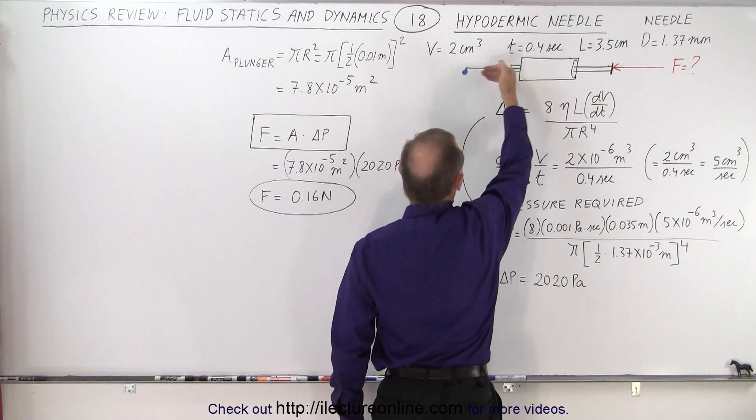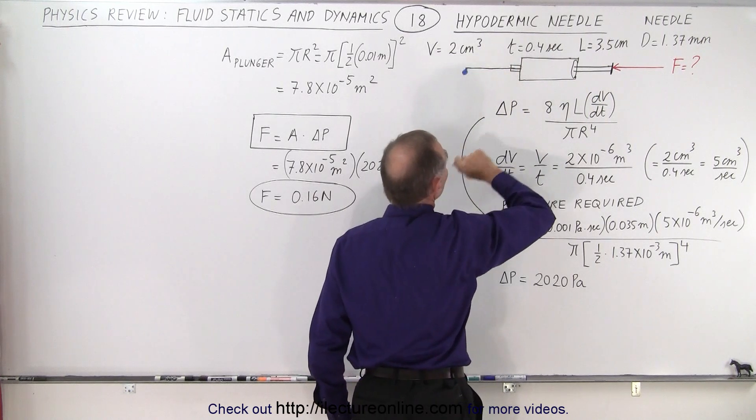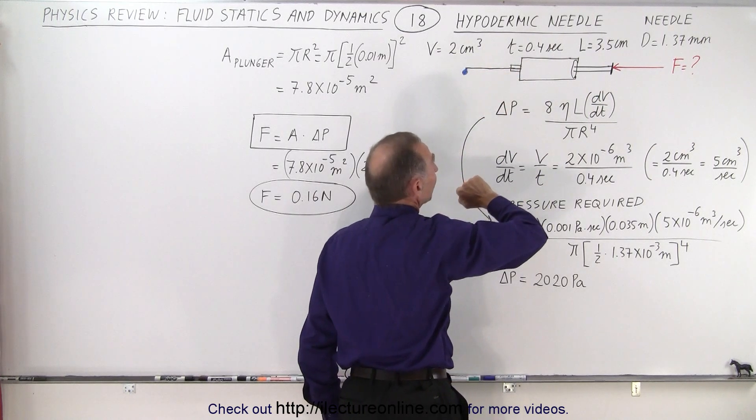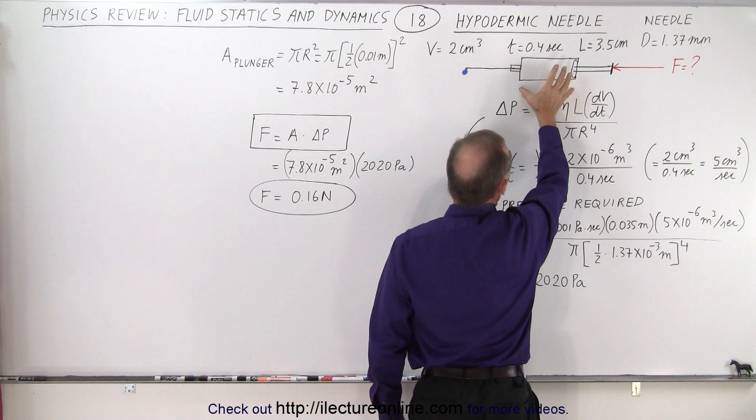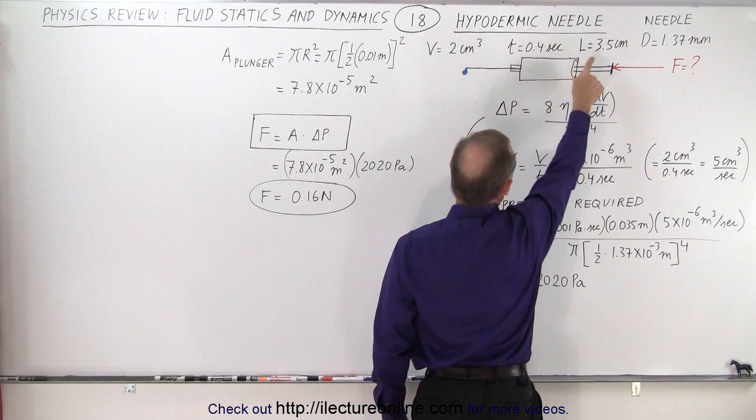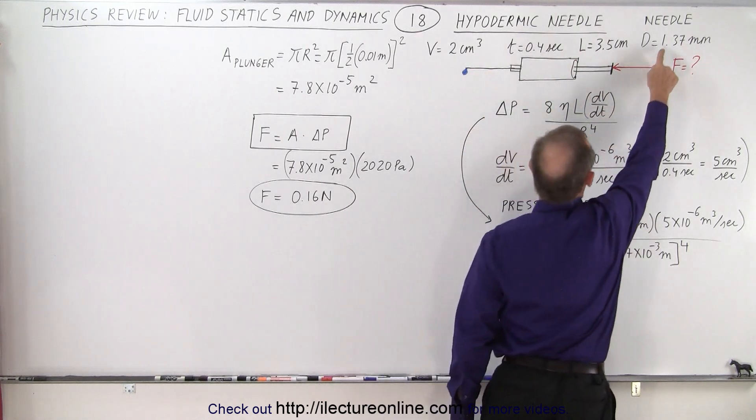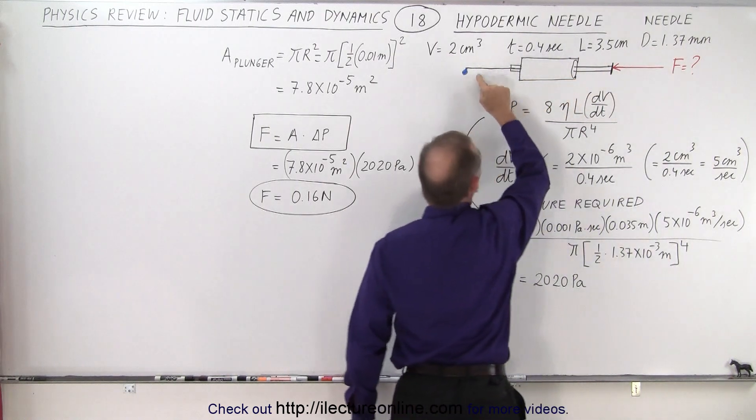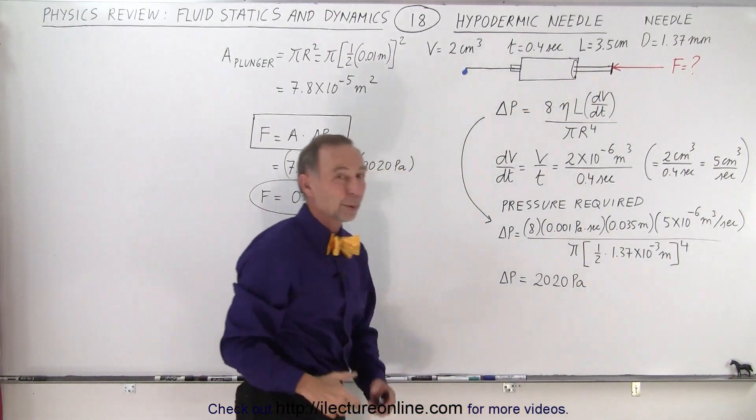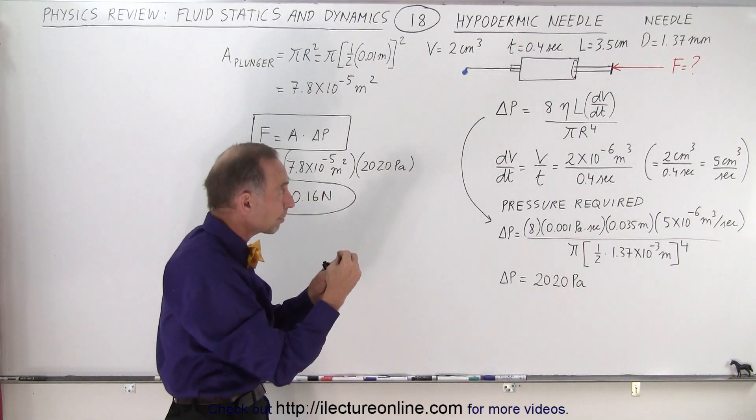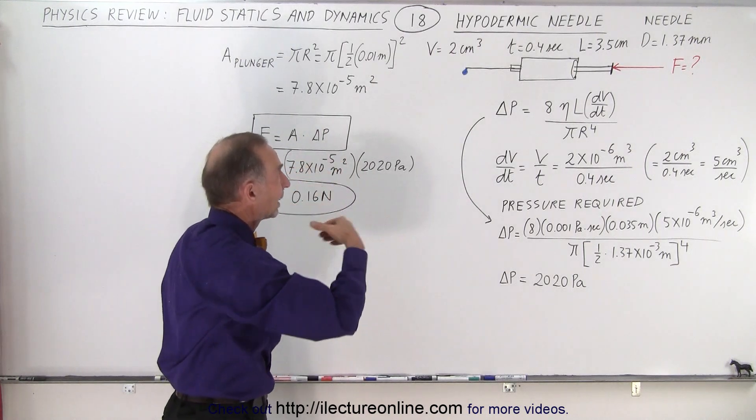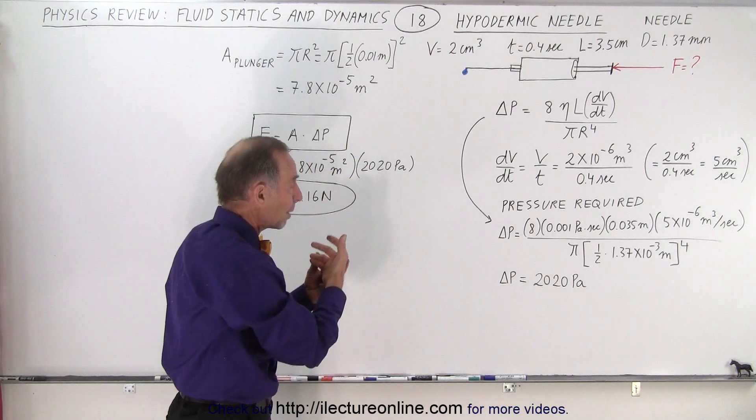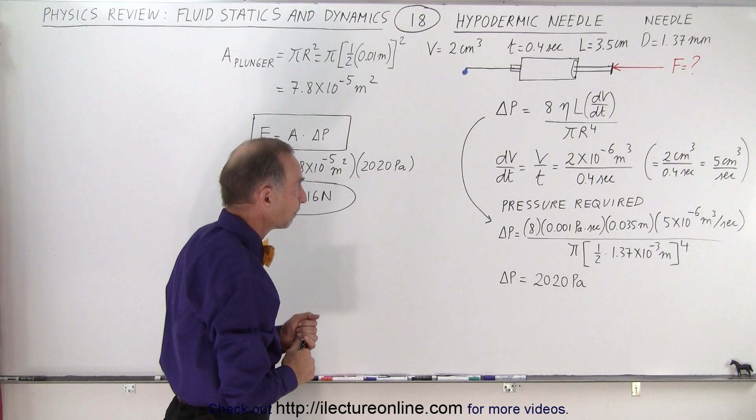The volume of fluid that needs to be pushed through the needle is 2 cubic centimeters. We want to do it in 0.4 seconds. The length of the needle is 3.5 centimeters and the diameter of the needle is 1.35 millimeters and we want to know how much force needs to be applied to push the fluid through the needle into the body. Of course we're injecting some fluid there.